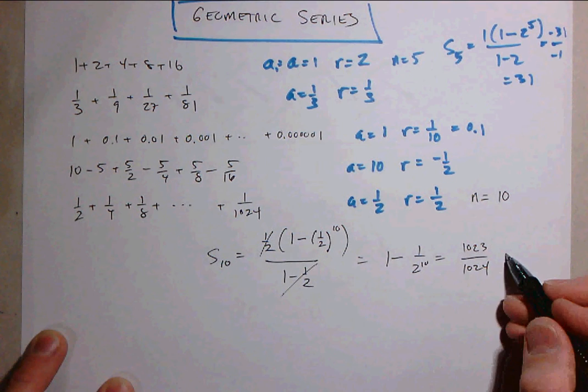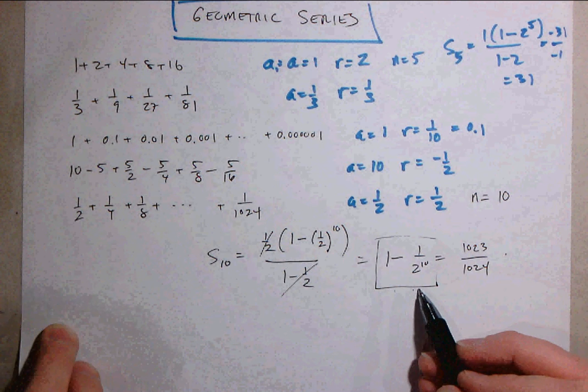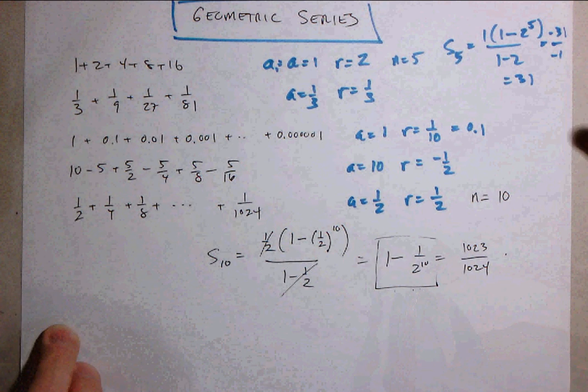So this is just 1 minus 1 over 2 to the 10th, which is 1023 over 1024, which is very close to 1, which you could tell by looking at this. And in fact, this is probably a preferable form of that number, as we'll see a little bit later.